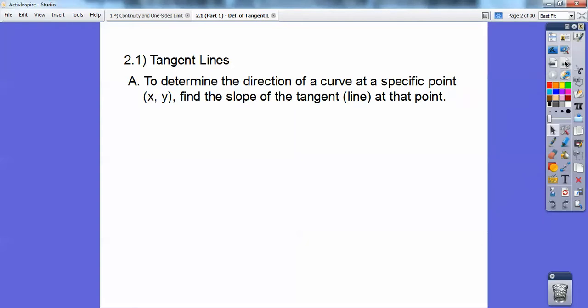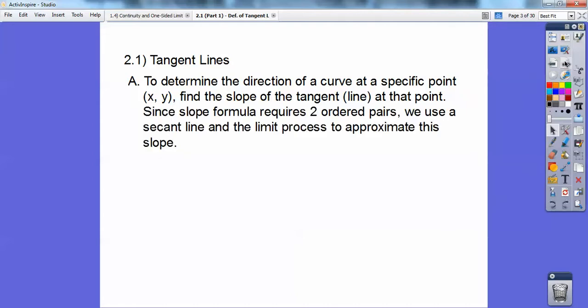To determine the direction of a curve at a specific point (x, y), you can find the slope of the tangent line at that point. Since slope formula requires two ordered pairs, we'll use a secant line in the limit process to approximate this slope.